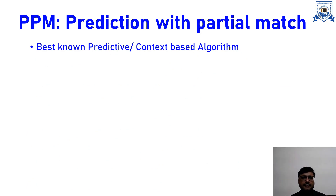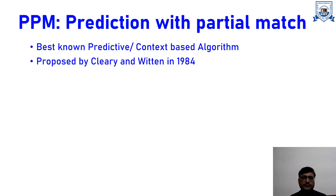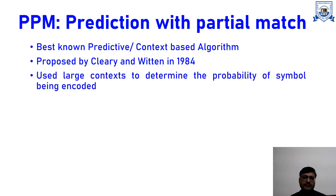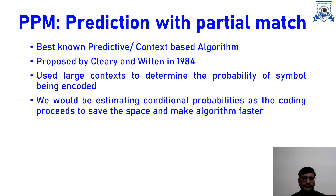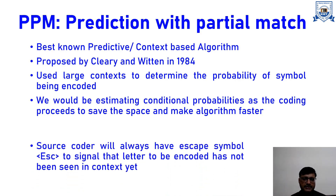Now we will look at PPM, that is Prediction with Partial Match. It is also known as a predictive or context-based algorithm and was proposed by Cleary and Witter in 1984. We look at the largest context to determine the probability of the symbol we are going to encode, and we estimate the conditional probability, which makes our algorithm faster.